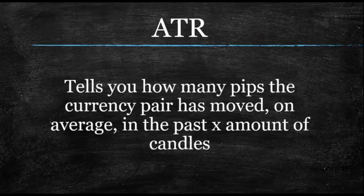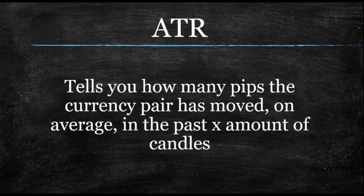The ATR stands for Average True Range. All it does is tell you how many pips a particular currency pair has moved on average in the past X amount of candles. The default settings on most platforms is 14, so in the past 14 candles, on average, from top to bottom, how many pips does this thing move? That's it. The end.